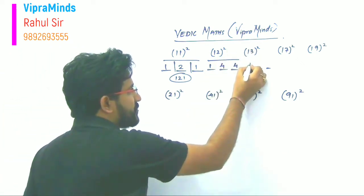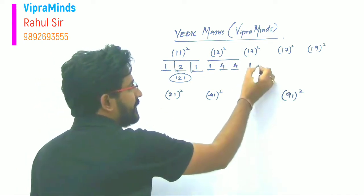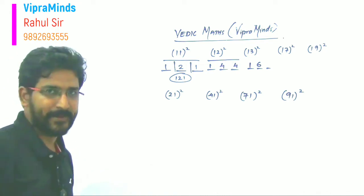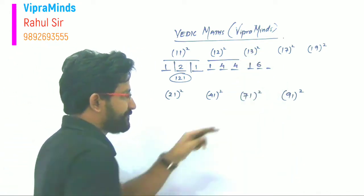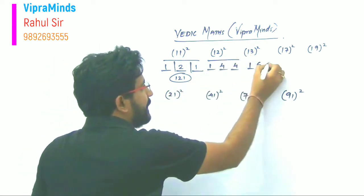Now 13 square. First block is one. Then three plus three is six. This unit place value is double or add two times, so six. And last block, unit place square, so three square is nine. So your answer is 169.